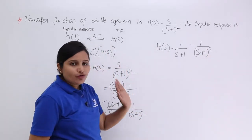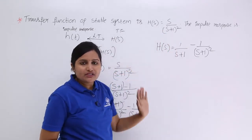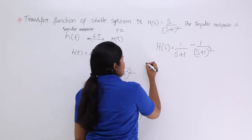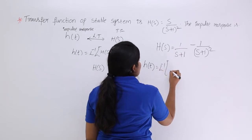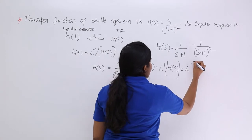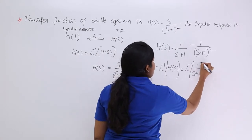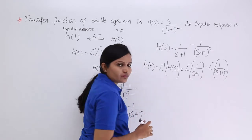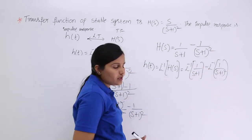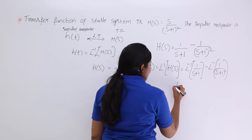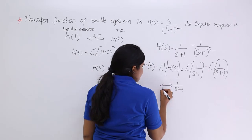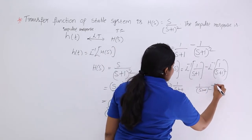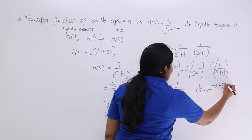Now to find the impulse response, we apply the inverse Laplace transform to this expression: inverse Laplace of 1/(s+1) minus inverse Laplace of 1/(s+1)². We know that for 1/(s+a), the time domain signal is e^(-at)·u(t), and for 1/(s+a)², the time domain signal is t·e^(-at)·u(t). So with a=1: 1/(s+1) gives e^(-t)·u(t), and 1/(s+1)² gives t·e^(-t)·u(t).